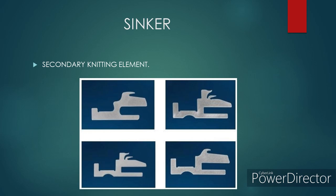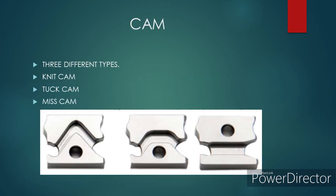The third and final basic element of knitting is the cam. Cam is a metal plate which has channels or grooves. These grooves provide a path to the needle during the loop formation process. The butt of a needle moves in the cam, and the knitting action takes place due to the shape of the cam. There are three different types of cams: knit cam, tuck cam, and miss cam, all shown in the figure. All types of knitted fabric structures are made with the help of these three cams only.